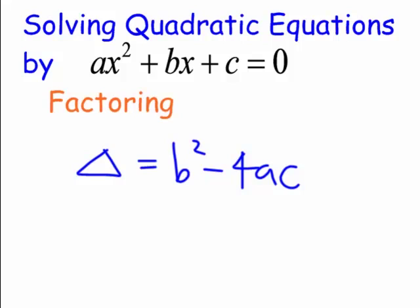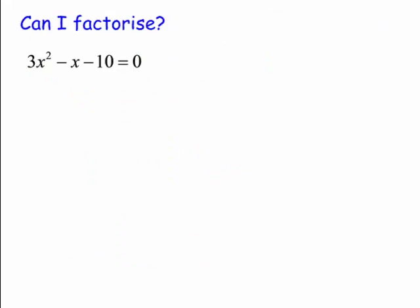Once we've worked out that it's factorable, we use the fact that if a times b equals zero, then a equals zero or b equals zero. We use this fact to actually solve the equation once we've factored it.